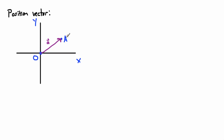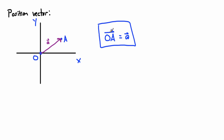We write the position vector as OA with a vector sign on top, going from the origin to point A. This tells you the vector joining O and A — there's only one straight-line path that gets you there. We define this as just vector a. That's how we define a position vector.